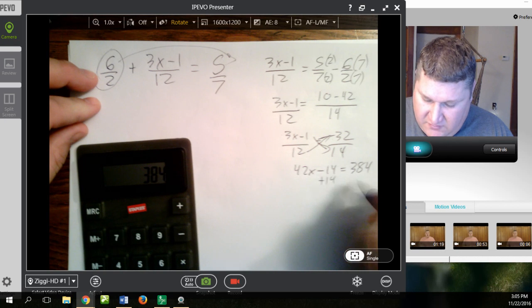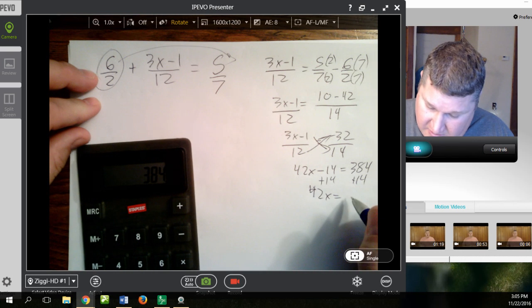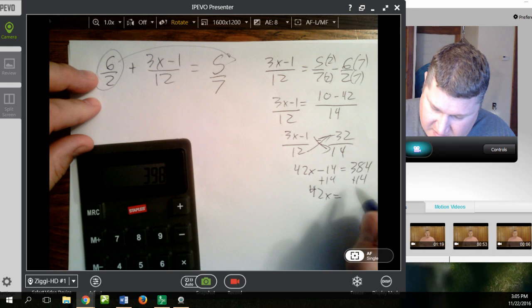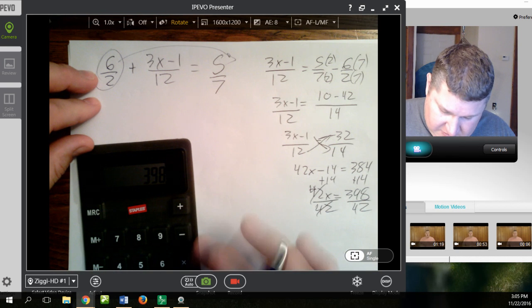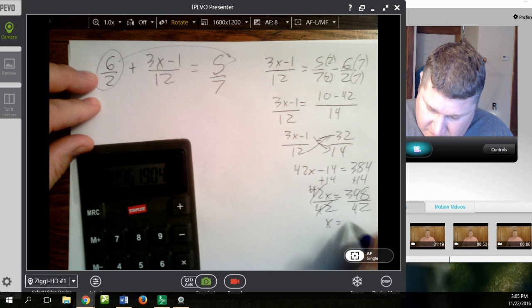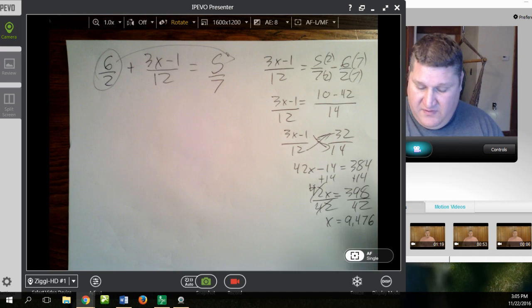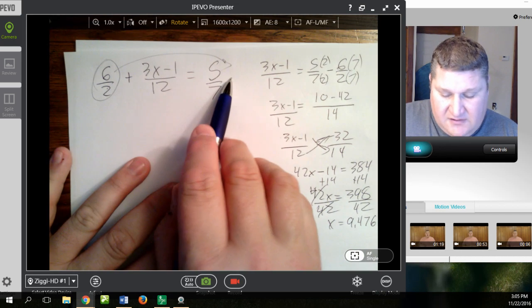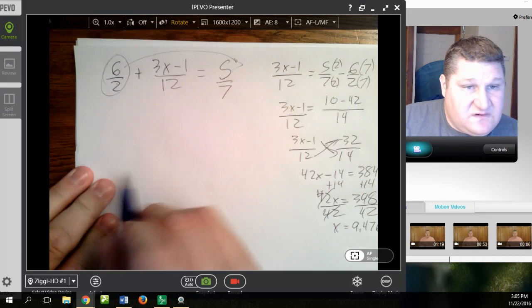And add 14 to both sides. So, I have 42x equals 384 plus 14, 398. Then I divide both sides by 42. Cancel, cancel. 398 divided by 42. Answer is x equals 9.476. Okay, now, this got big numbers and ugly, but the process itself wasn't hard. I simply combined the two fractions, found common denominators, and cross-multiplied and solved. Here, I could also do the same thing.